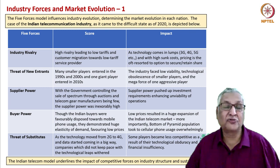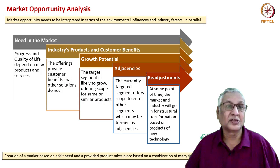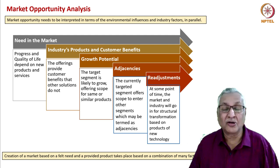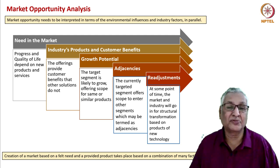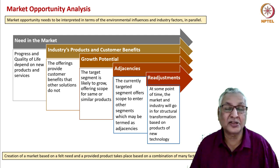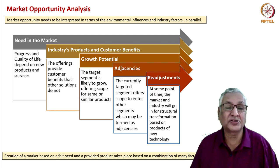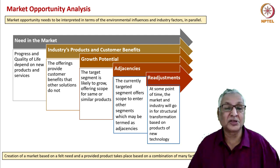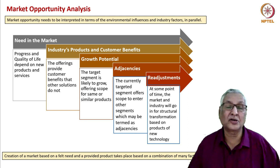Market opportunity analysis: we need to understand market opportunity in great depth. Along with environmental influences and industry factors being analyzed in parallel, there are five aspects of market opportunity analysis. First, the need in the market — whether the market is moving towards progress and how quality of life would depend upon new products and services. Second, specific industry products and customer benefits — in this evolving quality-of-life syndrome, what offerings will provide the benefits the society is seeking, and what solutions have lived their day and are no longer useful.